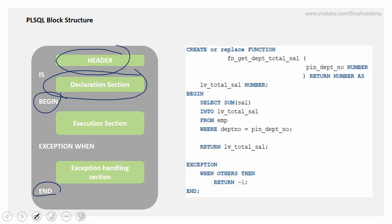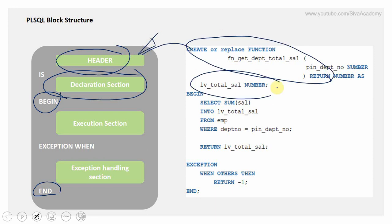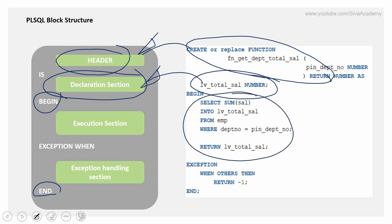When we create any procedure or function, we'll definitely be following this structure. If we just want to map it: this is all about the header section, this is all about the declaration part, the section between BEGIN and the EXCEPTION keyword is the execution section, and from the EXCEPTION keyword till END forms the exception section.